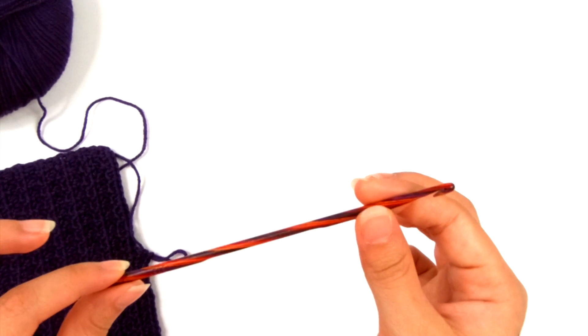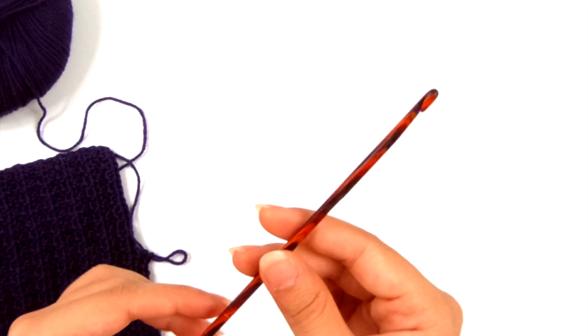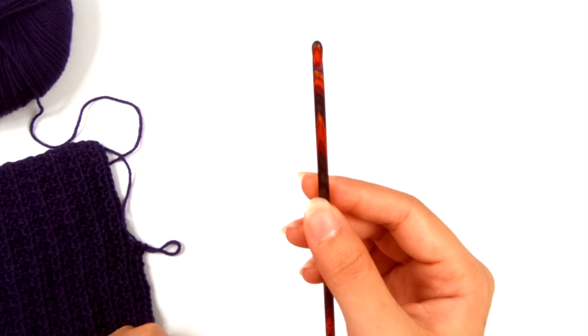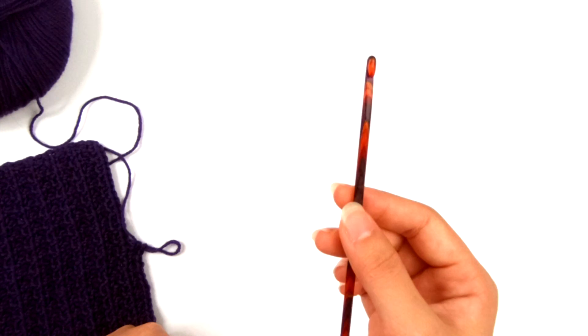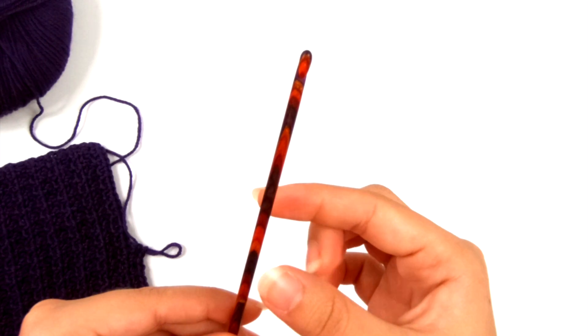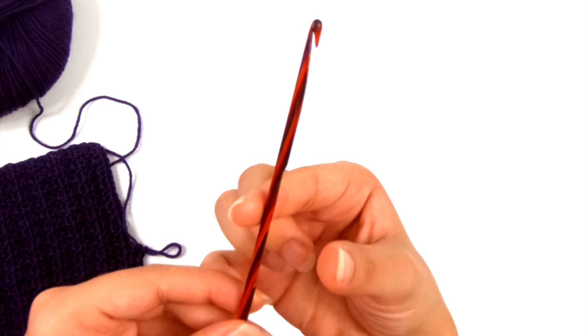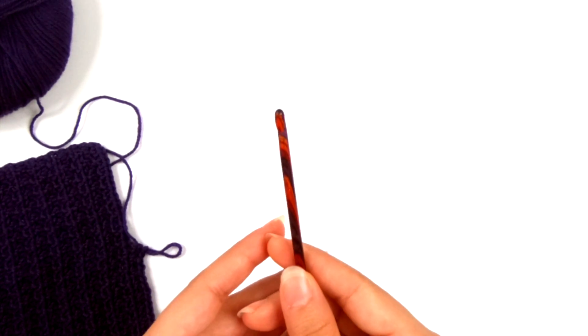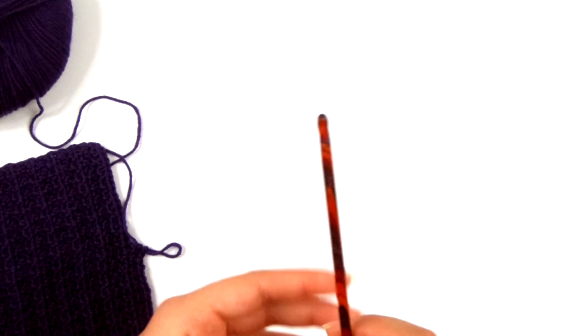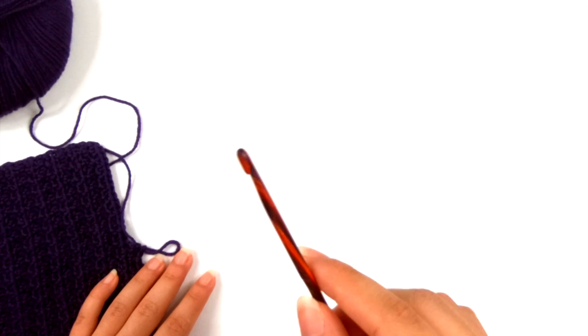The one thing and this is literally the only thing that I would like to have seen different on this hook is the handle. This is a pretty thin handle. Now, if you compare this to like your regular aluminum crochet hooks, this isn't going to be any different than what you've got as far as the thickness of the handle. But I really prefer a thick, and I mean like three-fourths of an inch thick, handle on my crochet hooks because I do a lot of crocheting for my channel and for my blog.